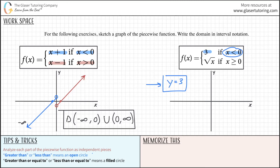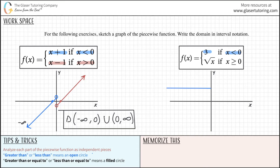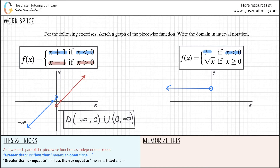What does the line look like when y equals 3? It's a horizontal line. Find 3 on the y-axis — it's located here — and draw a horizontal line going all the way to the left until x equals 0. It goes left because x is less than 0. No matter what x is — negative 2, negative 6 — y is always 3. That takes care of that part.